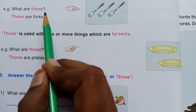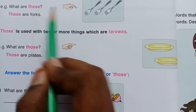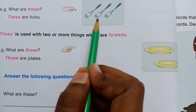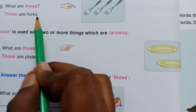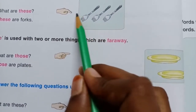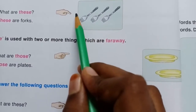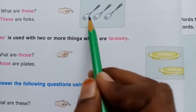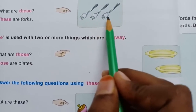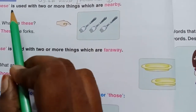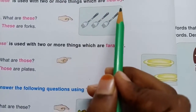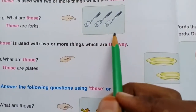What are these? These are forks. You can see the distance — near only, and many. You can see many forks. So we use 'these' for two or more things which are nearby. Remember this.